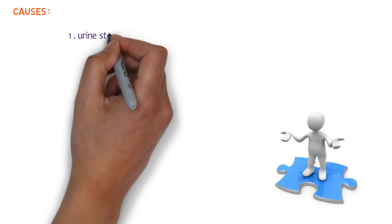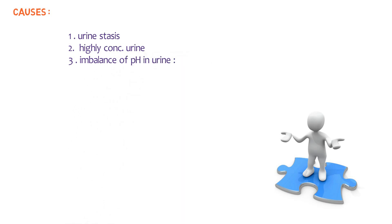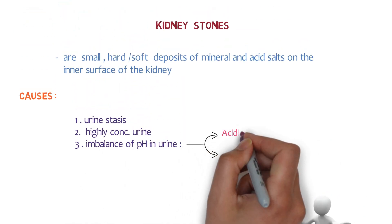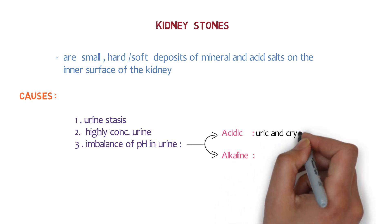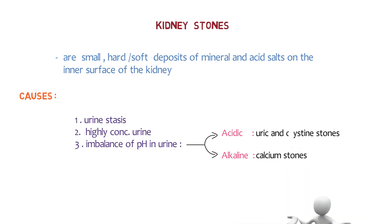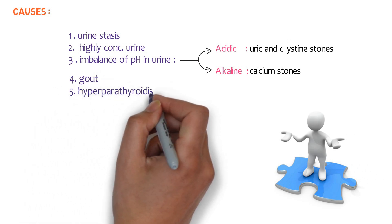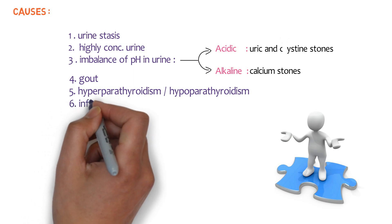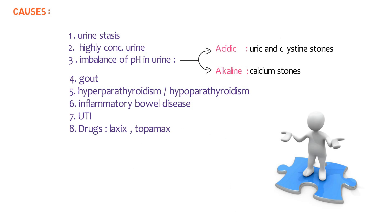So what are the causes that can form kidney stones? The first one is urine stasis, which can be due to highly concentrated urine. It might be due to the imbalance of pH in urine - it can be acidic or alkaline. Acidic pH can form uric acid and cysteine stones, while alkaline pH can lead to the formation of calcium stones. Conditions like gout, hyperparathyroidism, hypoparathyroidism, inflammatory bowel disease, and urinary tract infections can lead to the formation of kidney stones.